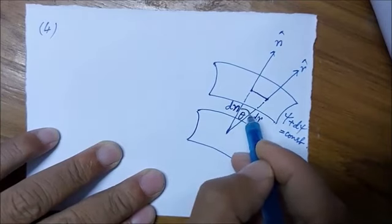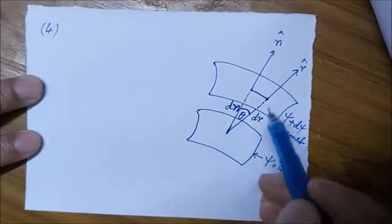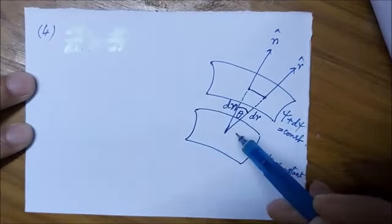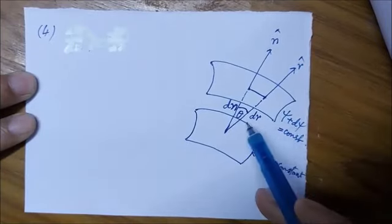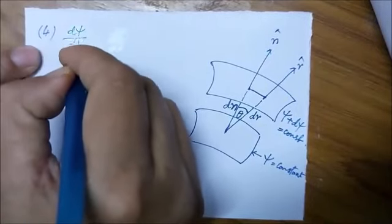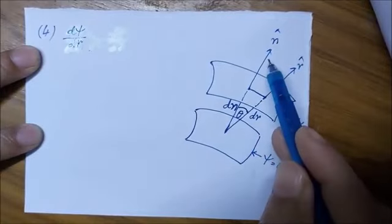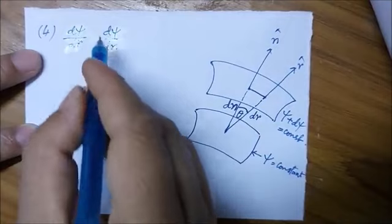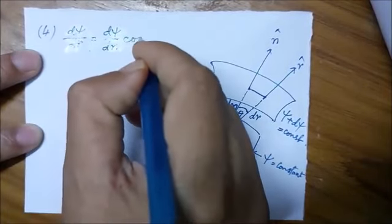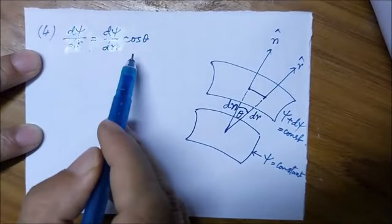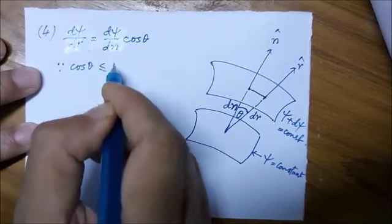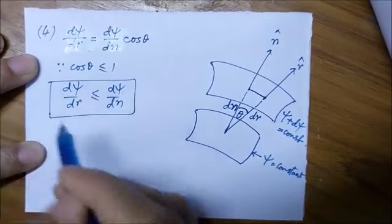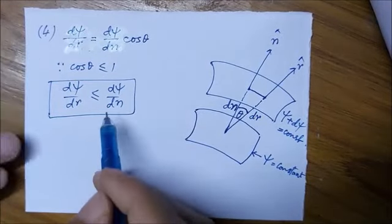The angle between the normal and the radial direction is theta. The directional derivative of psi along r cap is d psi/dr, and the directional derivative along the normal is d psi/dn. The two are interrelated: d psi/dr = d psi/dn * cos theta. Since cos theta is less than or equal to 1, d psi/dn is the fastest directional derivative.